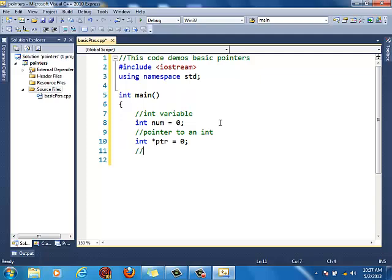So let's say set num to something. So num equals 20. That puts a value in num. Set PTR to point to num. PTR equals ampersand num. So let's take the address of num and put it in PTR.